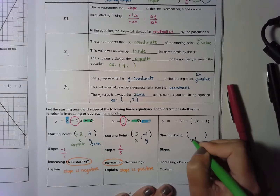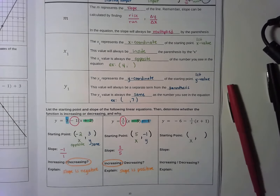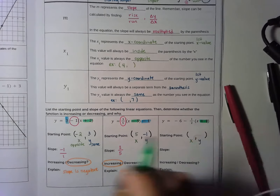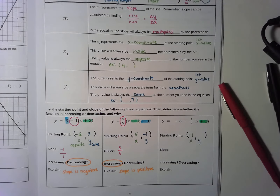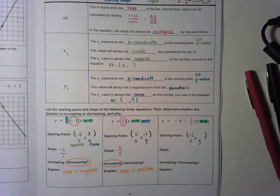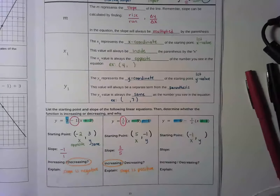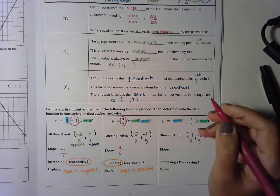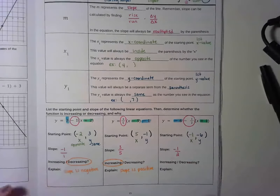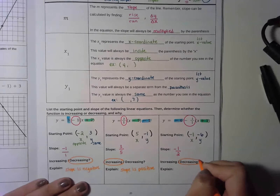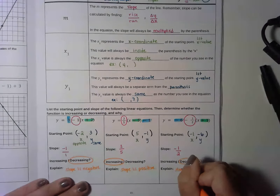In this next equation, similarly, to find the starting point and slope, I need the x coordinate and y coordinate. The x coordinate is inside the parentheses by the letter x — it says positive 1, so the starting x is negative 1 because it's always the opposite. For the y coordinate, I look for the number that is a separate term from the parentheses, which is negative 6. The slope is the number multiplied by the parentheses, which is negative 1 half. Therefore this graph is a decreasing function because the slope is negative.